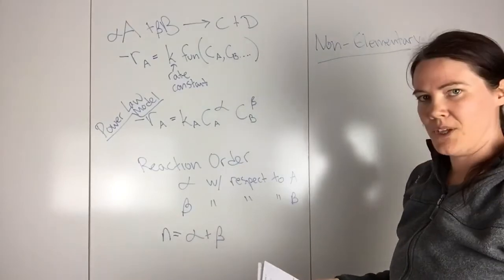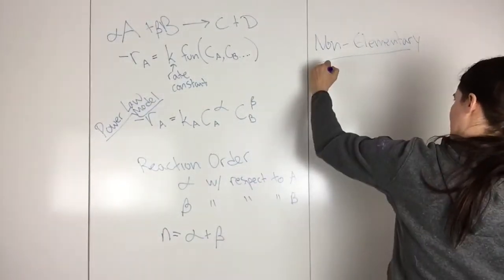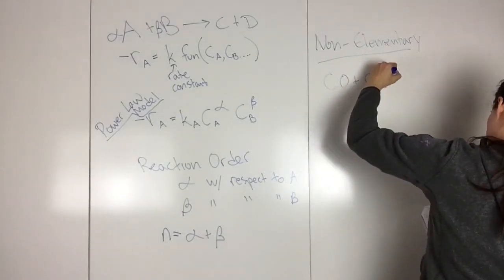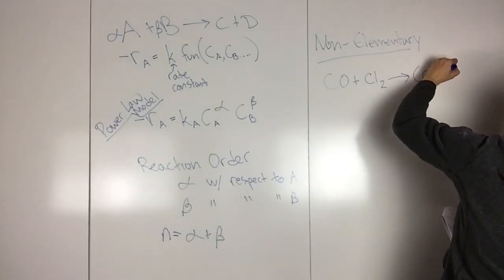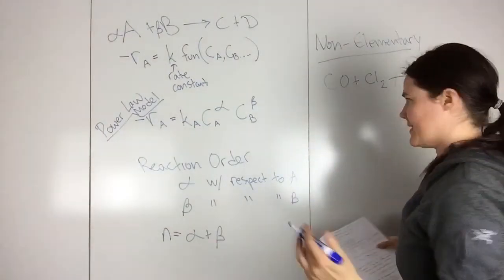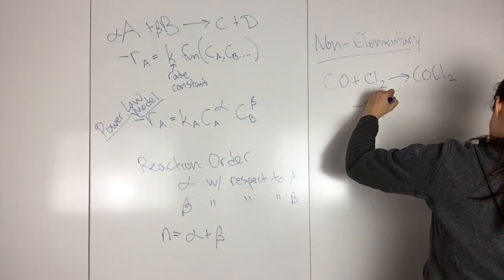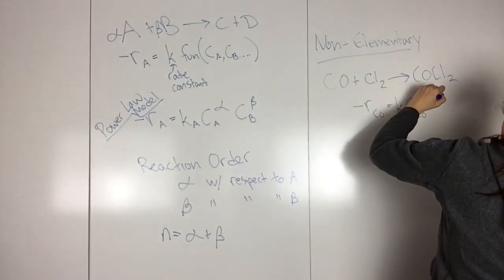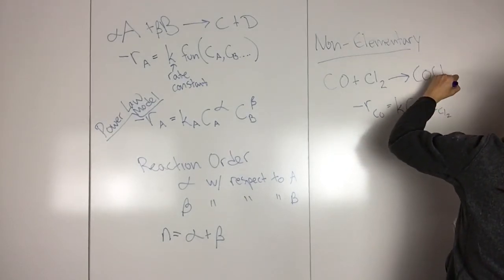So an example of a non-elementary rate law would be like the synthesis of phosgene. So that would be CO plus CL2 to COCL2. And so the rate law for this is RCO equals K, CCO, CCL2 to the three-half.